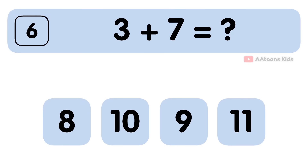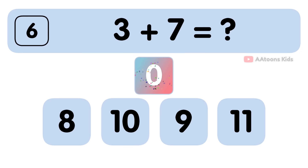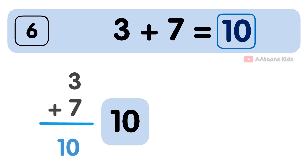3 plus 7 is equal to 10. So the answer to 3 plus 7 is 10.